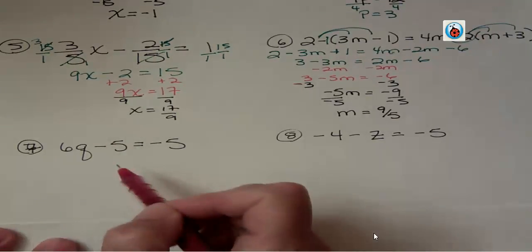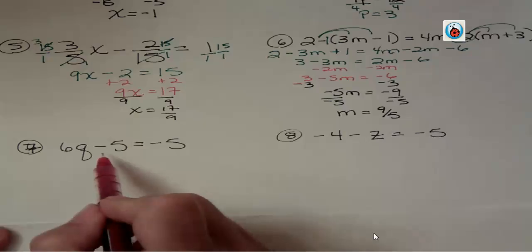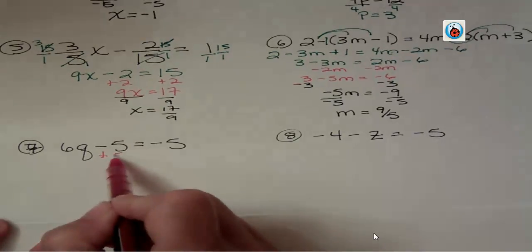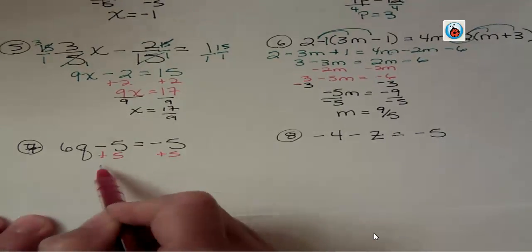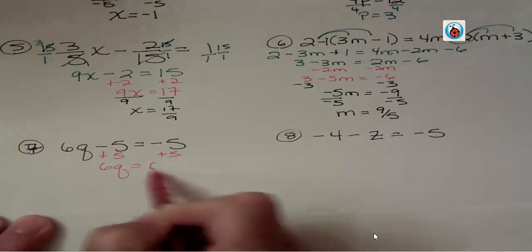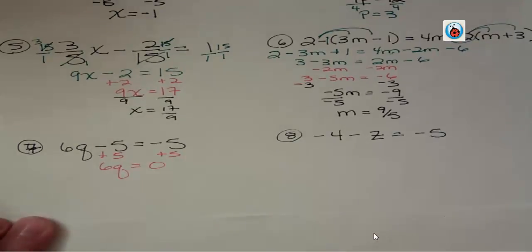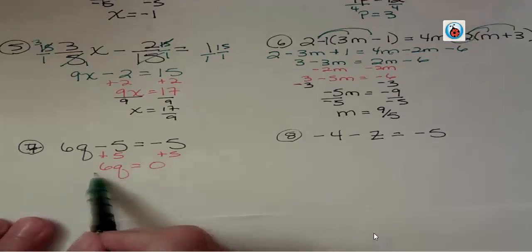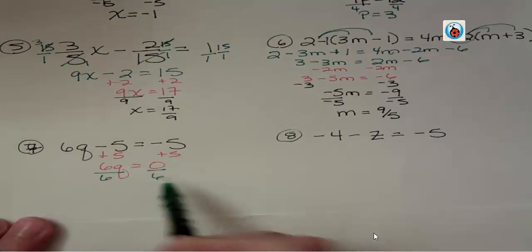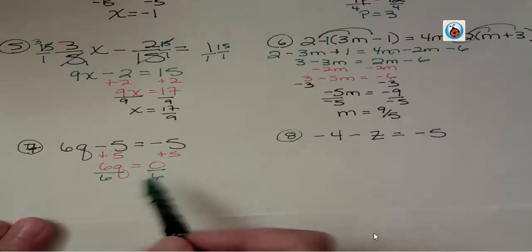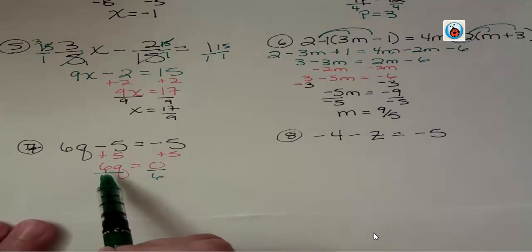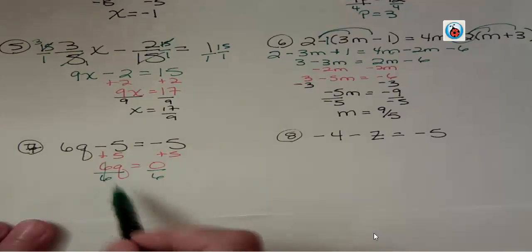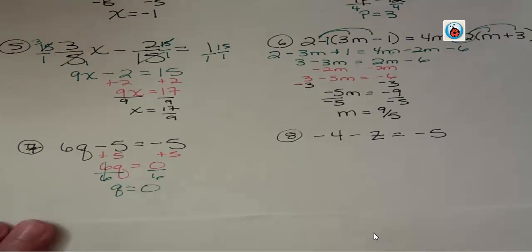The last two don't take very long, but I wanted to show you one more time something that trips people up. Add 5 to both sides here. You get 6q equals 0. That's where some people really stumble because it doesn't make sense to them to have 0 over here. Remember, 0 divided by anything is 0. What this is actually saying is 6 times something equals 0. Of course, that something has to be 0. So the answer would be 0.